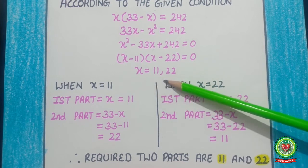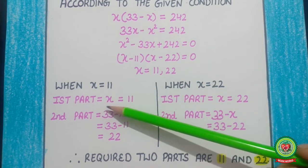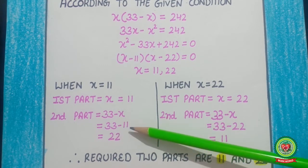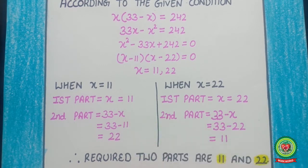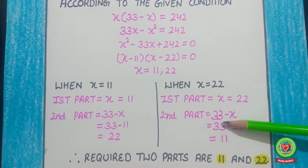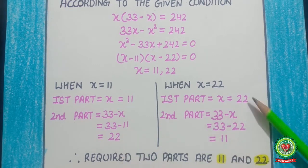The value of x equals 11 and 22. When x equals 11, the first part is x, so the answer is 11, and the second part is 33 minus 11, which is 22. When x equals 22, the first part is 22 and the second part is 33 minus 22, which is 11. Therefore, the required two parts are 11 and 22, as both values give the same answers. This is the first example related to word problems.